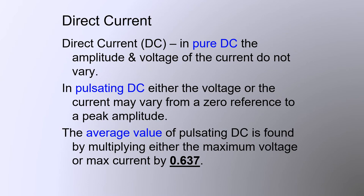The current produced by batteries is direct current. As long as the battery stays charged it puts out a constant voltage and current flow in any one circuit. But oftentimes we use an alternating current electrical power source to charge a battery or to supply electrical power to a direct current system such as those in our automobiles or aircraft.